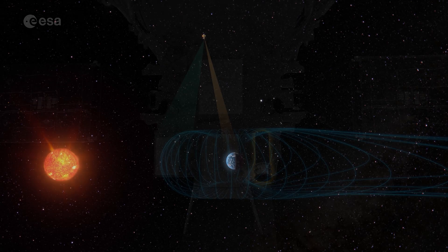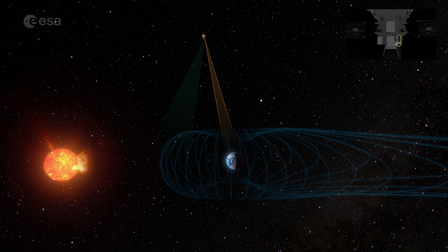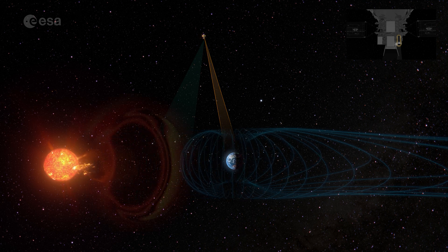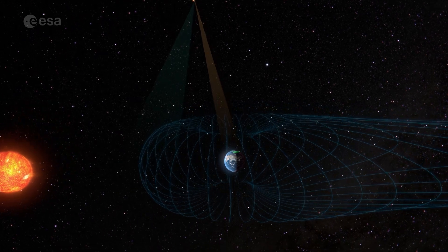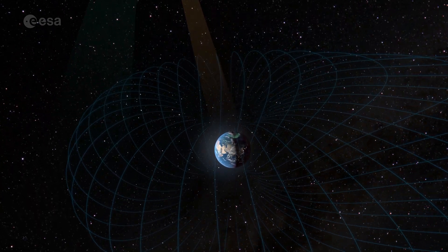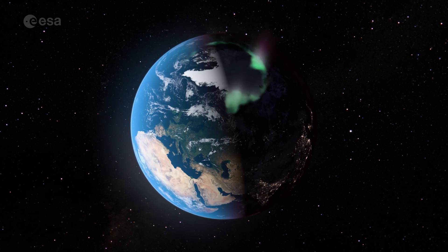At the same time, it will use ultraviolet vision to record the northern lights for more than 40 hours at a time, helping us understand how exactly Earth responds to solar storms.